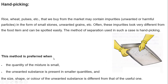When do we generally use this method? First, when the quantity of the mixture is small — that means when the amount of rice is in a small amount. We cannot use this method when the amount is in large quantity. Next, when the unwanted substance is present in smaller quantity — that means the amount of impurities like stones or unwanted grains is small.